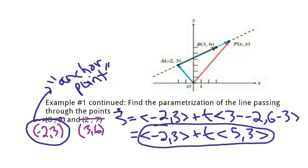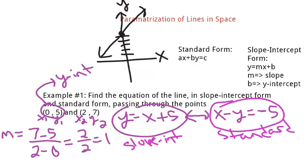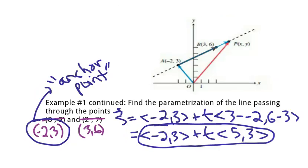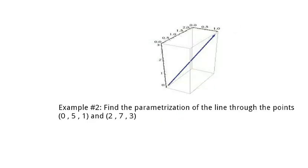Okay, so why is this useful? Why would I want three different ways to write an equation of a line? Slope-intercept form, standard form, and this parametrization form. Well, let's say that I have something in three dimensions now, say something like this. So this says find the parametrization of the line through the points (0, 5, 1) and (2, 7, 3). So first of all, I have an x, y, and a z value, so I'm in three dimensions.